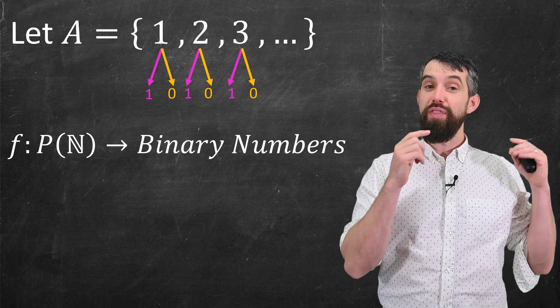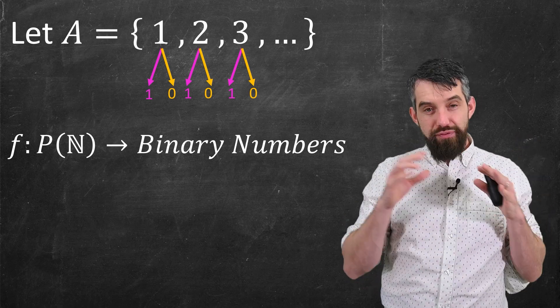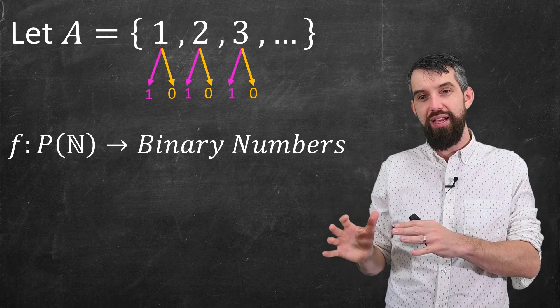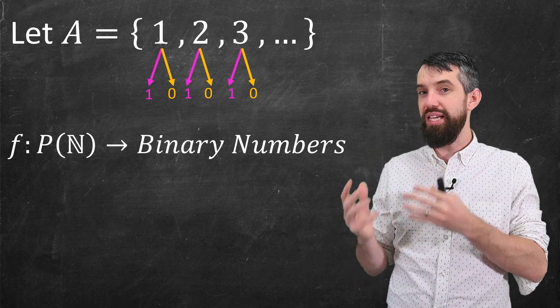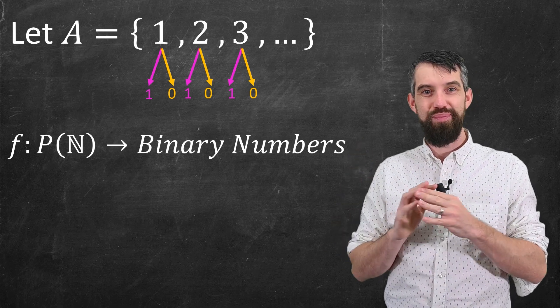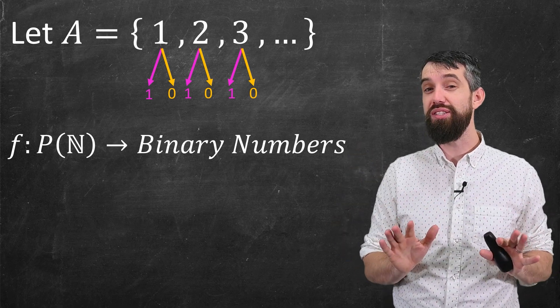And the reason I'm doing this is because I want to construct a particular function. This function is going to go from the power set of the natural numbers to very specific binary numbers. That is, for any given subset of the natural numbers, I want to spit out a particular binary number. Don't worry, I'm going to tell you why I'm doing this soon enough.